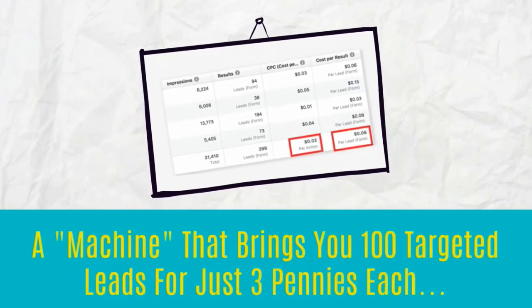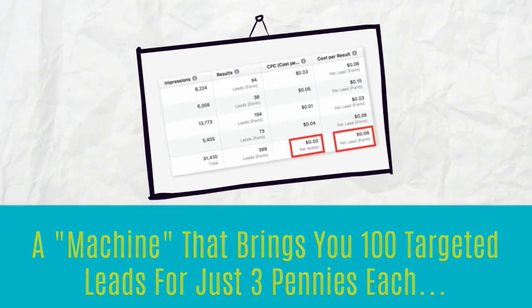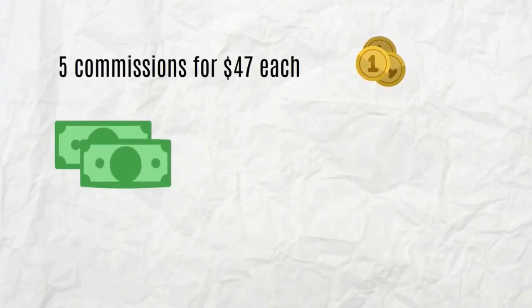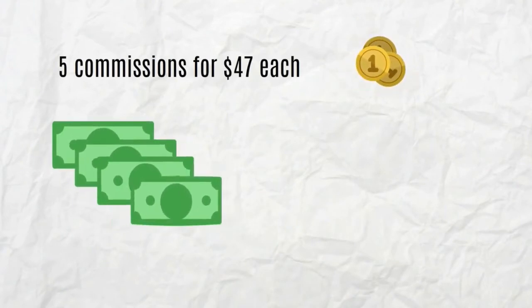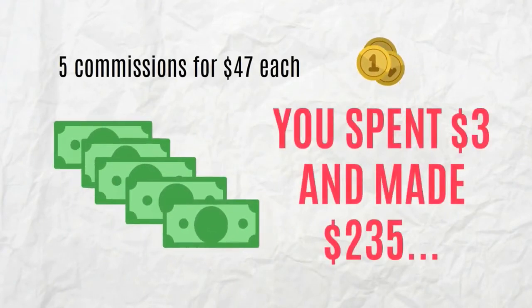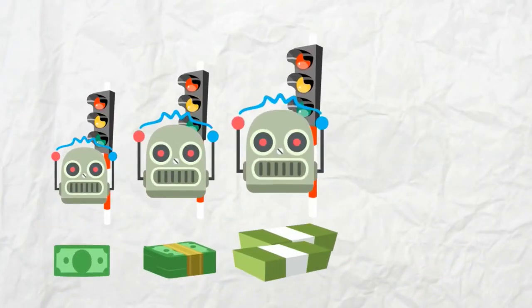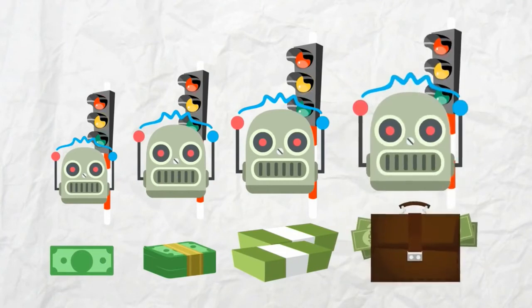Imagine having a machine that brings you a hundred targeted leads for just three cents each, and let's say you got five commissions at forty-seven dollars each. You spent three dollars and made two hundred thirty-five dollars. These kinds of results are absolutely possible. Now imagine scaling and having a few more of these traffic machines set up — that is what's possible for you using the strategies we teach.